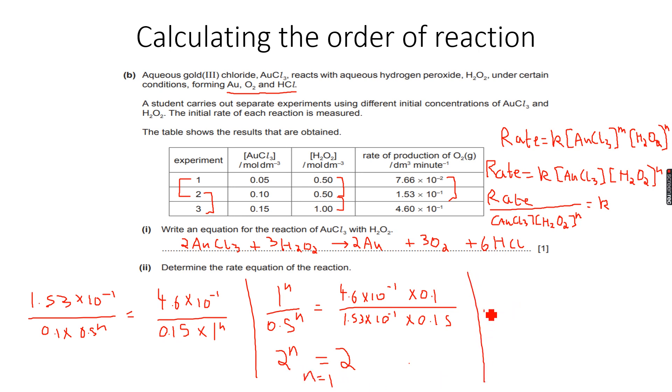So the overall rate equation that we get is: rate is equal to k times the concentration of AuCl3 to the power of 1 multiplied by the concentration of H2O2 to the power of 1.